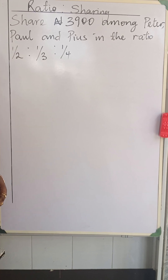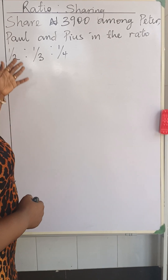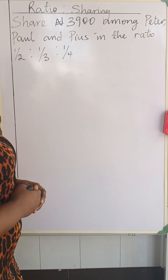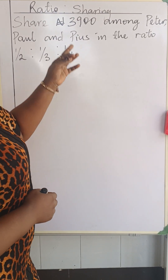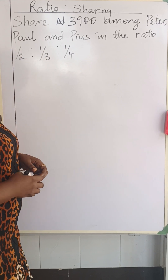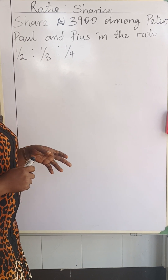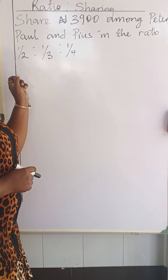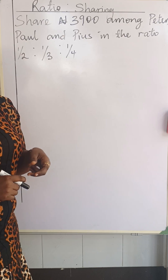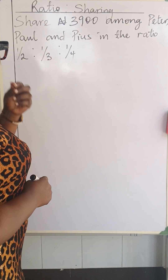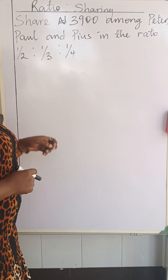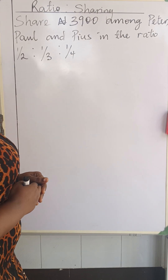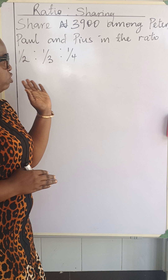Let's look at this question on the board: share 3,900 naira among three people — Peter, Paul, and Pius — in the ratio one over two, one over three, and one over four. That's one half, one third, and one fourth. Now when you see this kind of question involving fractions in a ratio...